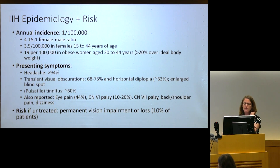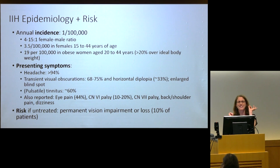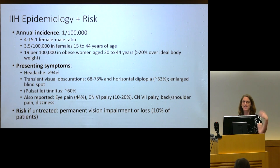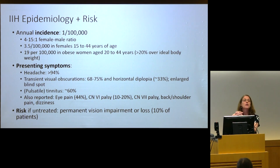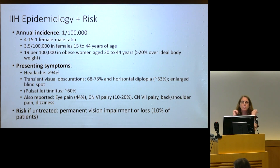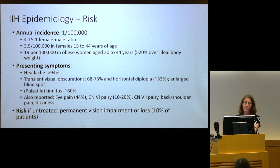Not everybody with pseudotumor gets a headache. Patients often don't present with static visual loss but rather transient visual obscurations — they may sit up, see something cloudy that then vanishes, and have it recur with position changes. Tinnitus and eye pain are also very common. A normal neuro exam is required to meet diagnostic criteria, and the patient must be awake and alert. Cranial neuropathies can be seen and are permitted. This is not a benign condition — it can cause permanent visual impairment in up to 10% if left untreated.